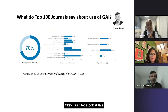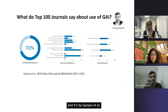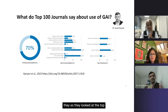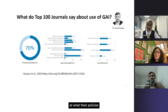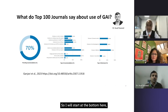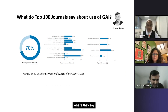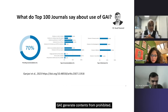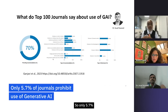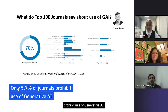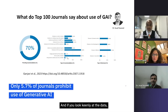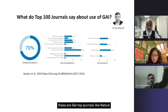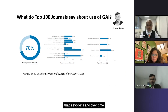First, let's look at this new paper which is just about to come out — it's actually in pre-print at the moment and it's by Ganjavi et al. (link in the description). What they did here was survey the top 100 science journals and look at what their policies were on generative AI. Starting at the bottom, where they say generative AI-generated content is prohibited — only 5.7% of journals prohibit use of generative AI, and if you look keenly at the data, these are top journals like Nature and others.